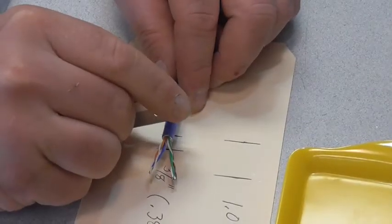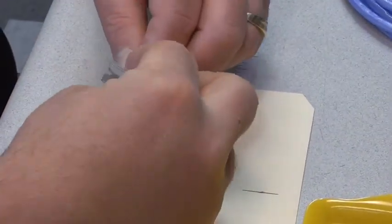Make cut C at 0.38 inches from cut A through the jacket as shown on screen.